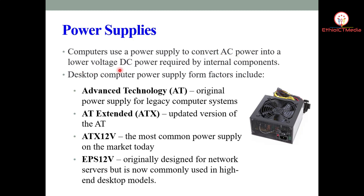The power supply converts AC power into lower voltage DC power — that is, direct current from alternating current — which is required by internal components like hard disks, CD-ROM, motherboard, and every component in the PC used at home stored in the system unit case.